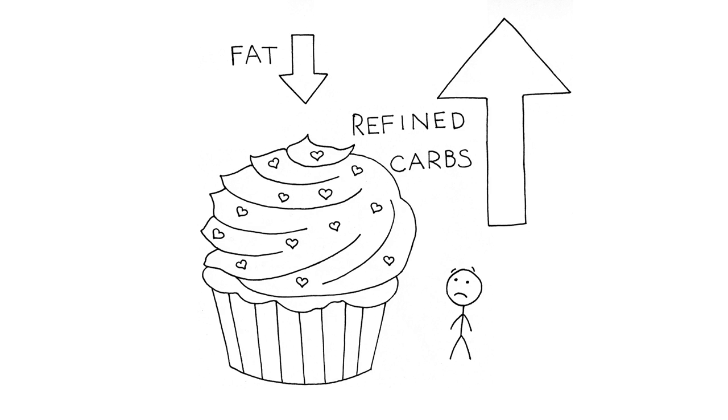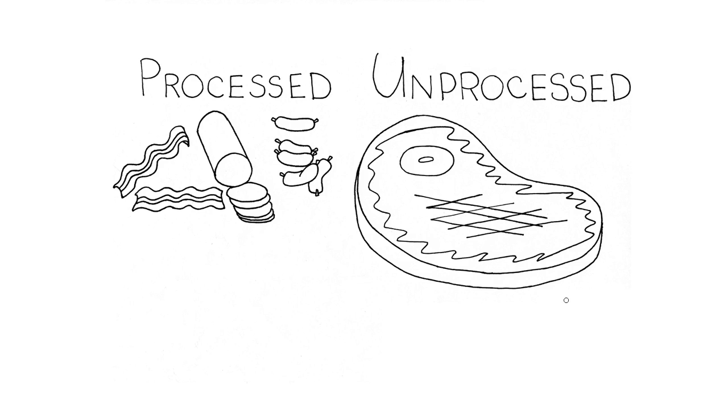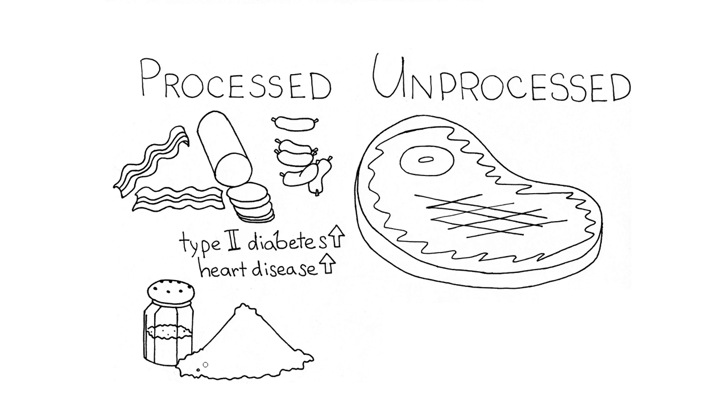Focusing on the fat in our diets can also hide other problems and lead us to well-intentioned but bad decisions. Processed meats, for example, like bacon, bologna, and sausages usually have equal or lower saturated fat compared to unprocessed meat like steak. However, processed meat is associated with a much higher risk of type 2 diabetes and heart disease. The risk is two or three times as high, possibly because processed meat have more sodium or salt.